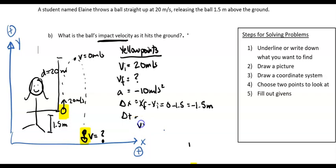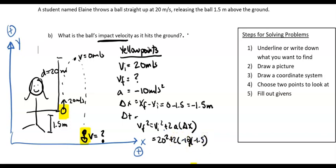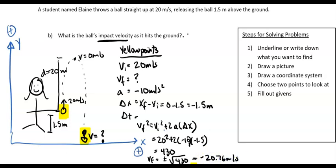Now I can pick a good equation: vf² = vi² + 2a·Δx. Plugging in: 20² + 2(−10)(−1.5). Those two negatives make it positive, so I get 430. Taking the square root gives plus or minus the square root of 430. Since the ball is going downwards, I choose the negative sign: vf = negative 20.76 meters per second.